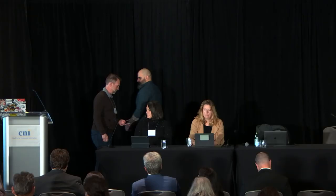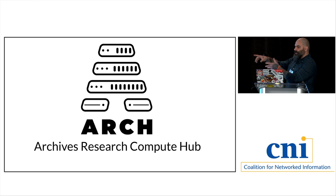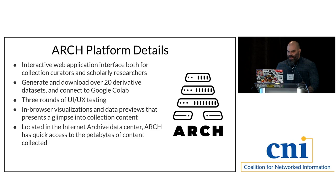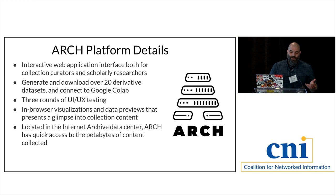ARCH — the Archives Research Compute Hub — is an interactive web application being used by collection curators who subscribe to Archive-It, as well as researchers who simply want to use web archives and do specific types of analysis. As of right now, you can generate and download over 20 derivative datasets from a given web archive collection, and those also connect out to Google Colab to do further analysis, depending on the size of the derivatives — because some derivatives are too big to work in Colab. We did three rounds of UI and UX testing, taking great care in this process.